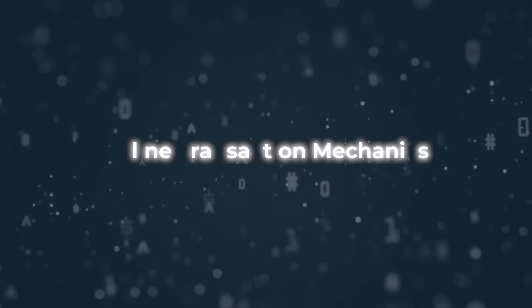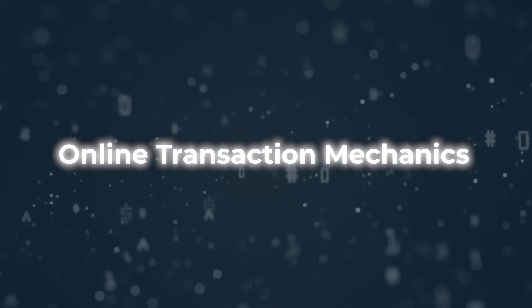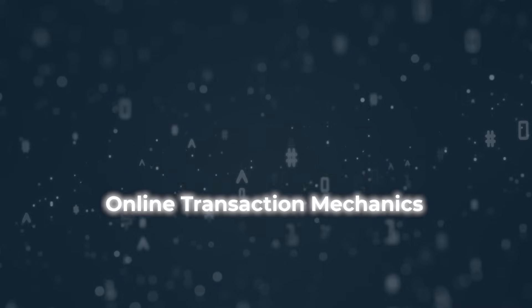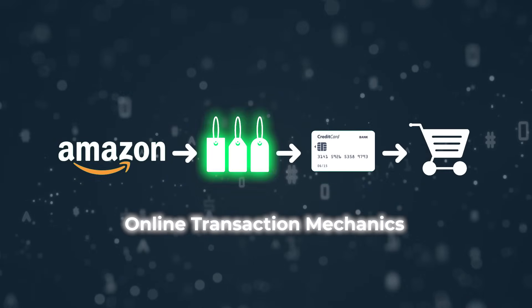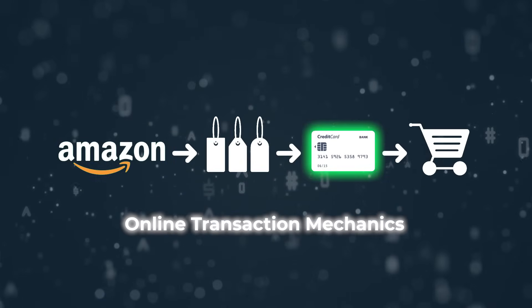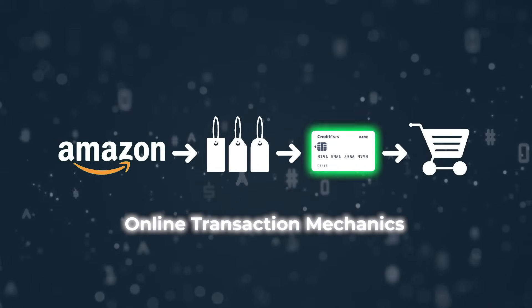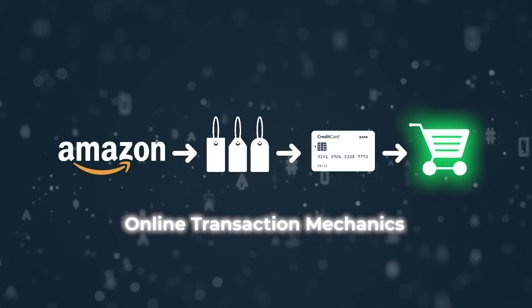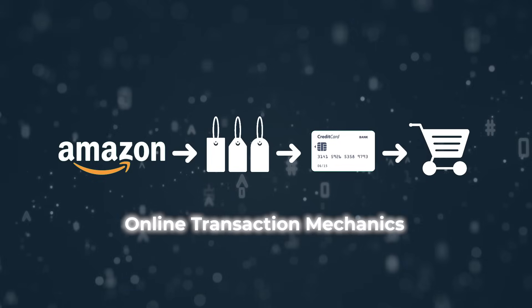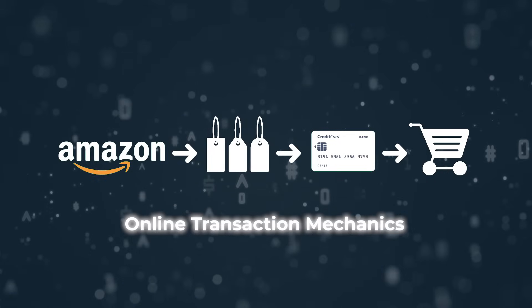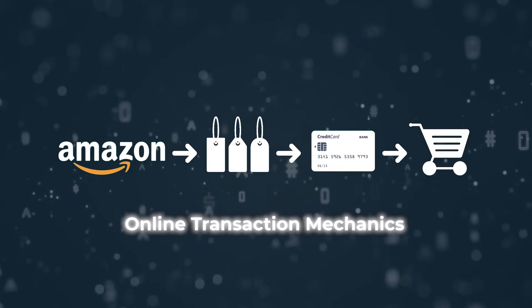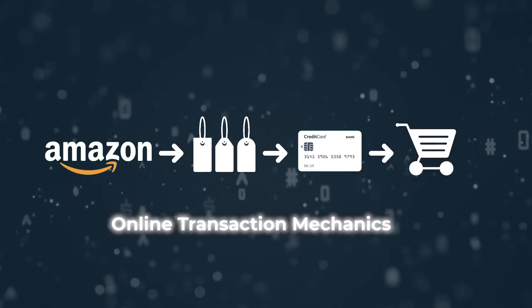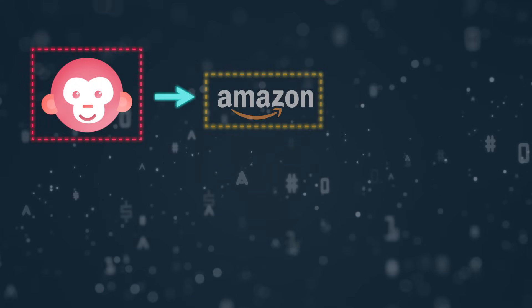How does an online transaction work mechanically? So you go on Amazon, you find a product you like, then you enter your credit card information and you check it out. On the backend of this simple online check-out process, there are quite a few parties involved in this transaction. First, you give your credit card information to Amazon.